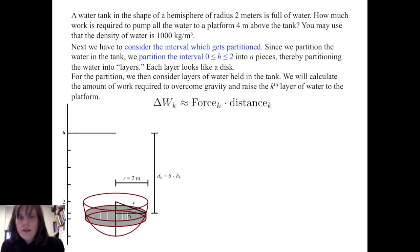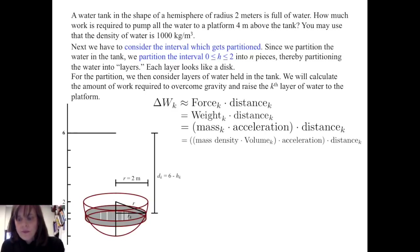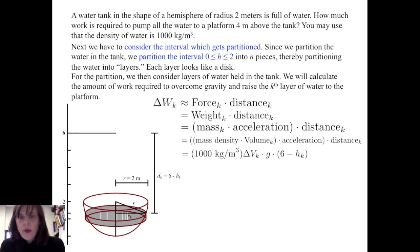As we calculate delta W sub k, we note that force is simply the weight of that kth layer of water, where weight is mass times acceleration. The mass will come from the mass density times the volume of water, multiplied by acceleration and the distance that layer has to travel. The mass density is 1,000 kilograms per cubic meter, the volume is delta V sub k, acceleration is represented as g, and the distance is 6 minus h sub k.